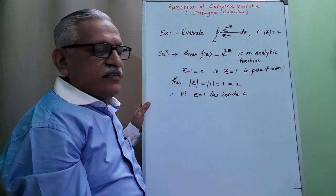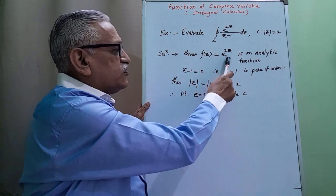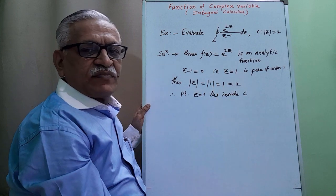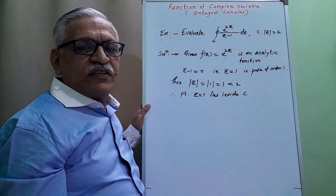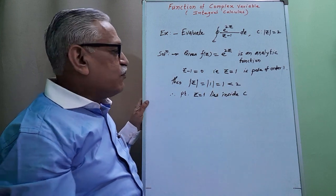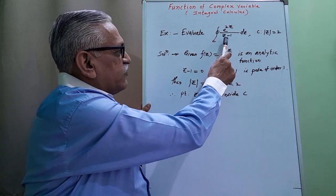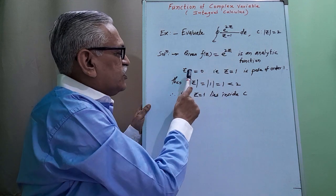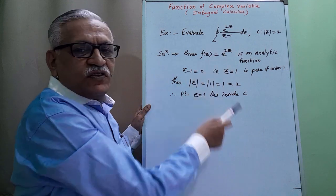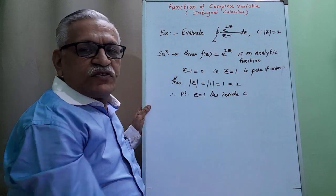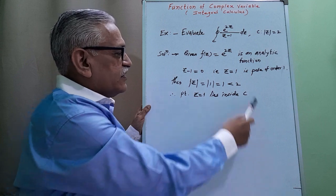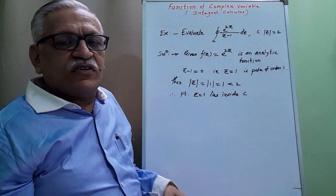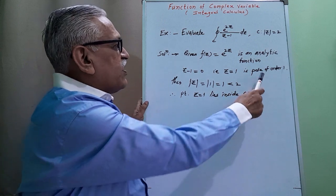Therefore, the given f(z) = e^(2z) is an analytic function. Then we have to check the pole by equating the denominator term to 0. We get z minus 1 = 0, that is z = 1. That z = 1 is a pole or singularity of order 1.